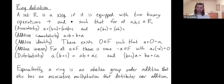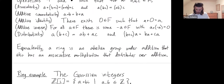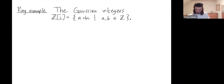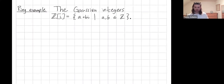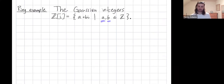All right, so next we'll move to a particular ring: the ring of Gaussian integers, and I'll describe some of its properties. The Gaussian integers are complex numbers of the form a plus bi where both a and b are integers. It's just a subset of the complex plane, and we can draw the Gaussian integers — it looks like a grid in the complex plane.